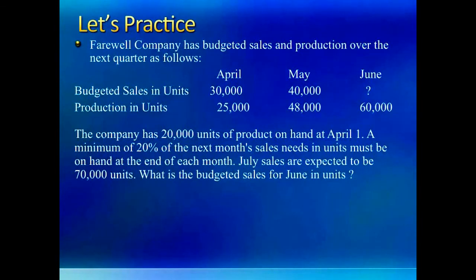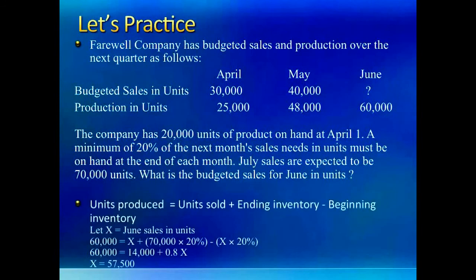Here we have to figure out what sales in June would be given the production numbers. Normally we start with the sales budget and then go to the production budget, but here we have to work in reverse. Using our equation method, we rearrange the formula to find units sold. We plug in the inventory desired at the end of June — which is 20% of July sales — and solve for the unknown. You can use this technique even if beginning or ending inventory is missing: just rearrange the formula and solve for the unknown.